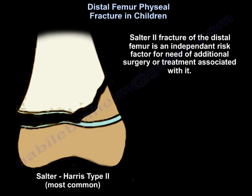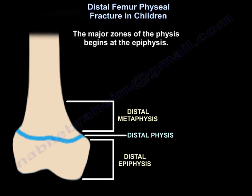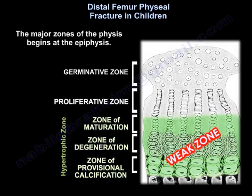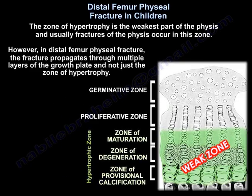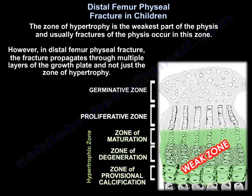The major zones of the physis begin at the epiphysis: the permanent layer, the proliferative layer, and the hypertrophic zone. The zone of hypertrophy is the weakest part of the physis, and usually physeal fractures occur in this zone. However, in distal femur physeal fractures, the fracture propagates through multiple layers of the growth plate — not just the zone of hypertrophy.